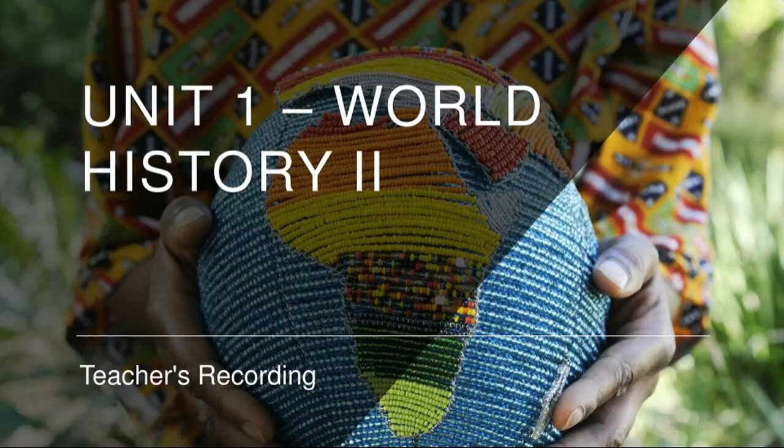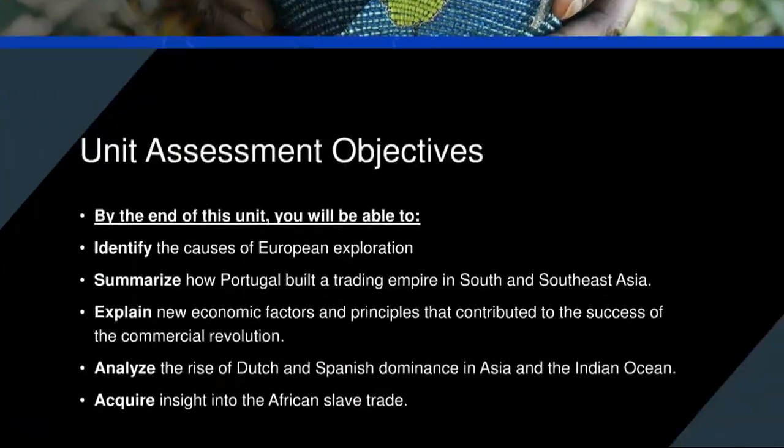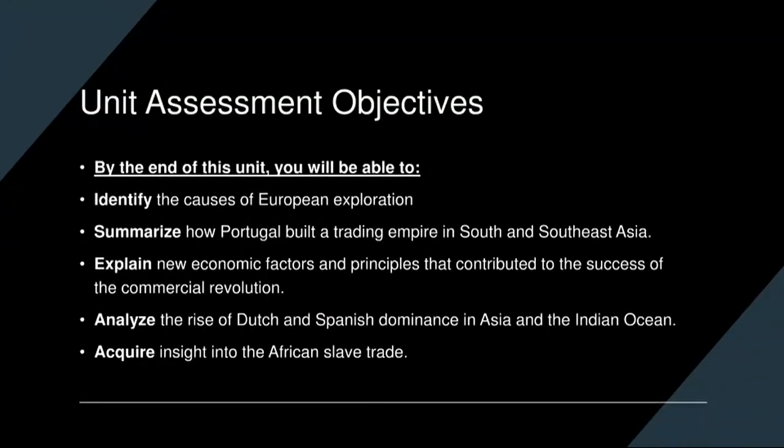This is the teacher's recording of Unit 1, World History 2. In this unit, our objectives will be: being able to identify the causes of European exploration, summarizing how Portugal built a trading empire in south and southeast Asia, explaining new economic factors and principles that contributed to the success of the commercial revolution, and analyzing the rise of Dutch and Spanish dominance in Asia and the Indian Ocean, as well as acquiring insight into the African slave trade.